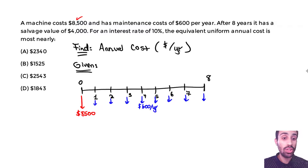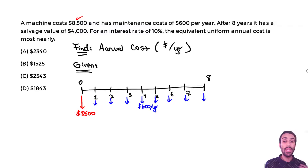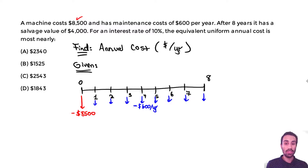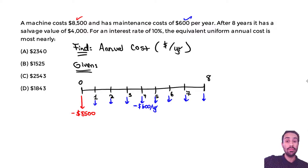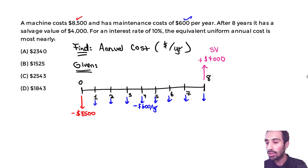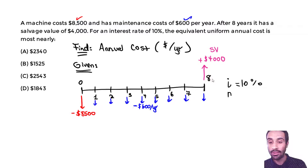After eight years, it has a salvage value of $4,000. The salvage value occurs in the future at the very end, and it's a positive value — it's something we get. Stay consistent with the signs: the initial cost and maintenance costs are negative because they are costs from the perspective of the investor. The salvage value is positive at year 8. The interest rate is 10% and the end value is 8.